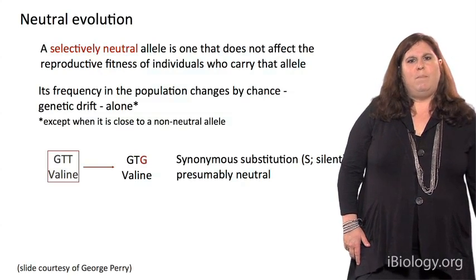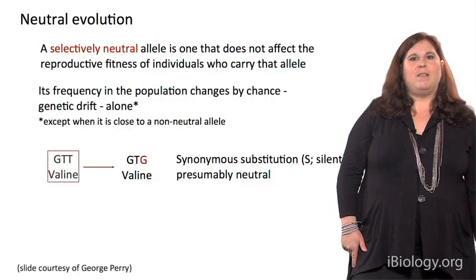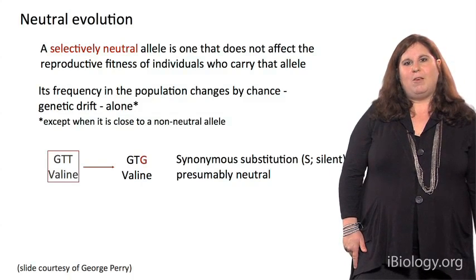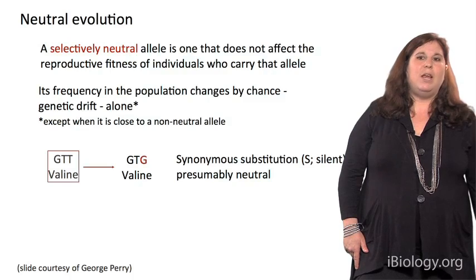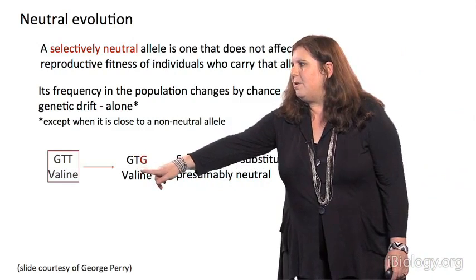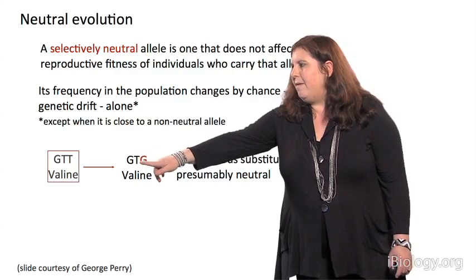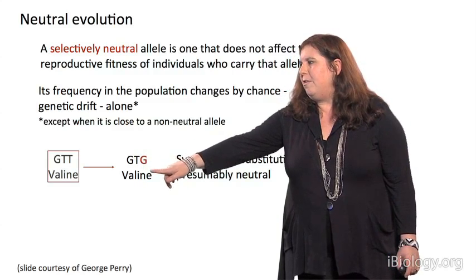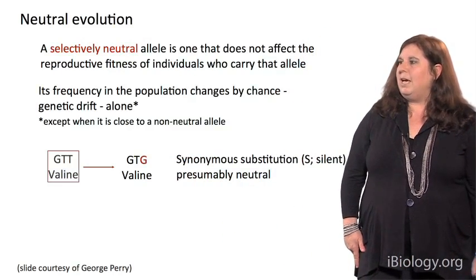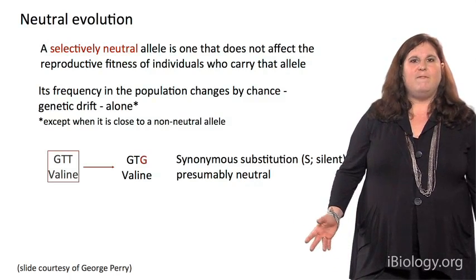I also want to define what we mean by neutral evolution. We define a selectively neutral allele as one that does not affect the reproductive fitness of individuals who carry that allele. So, its frequency in the population changes by chance, or genetic drift alone. And here we have an example. This is just a substitution in the third position of the codon. And when we have substitutions of nucleotides in the third position, very typically they result in a silent or synonymous change. Here there's been a substitution, but there's no change in the amino acid. It remains as valine.